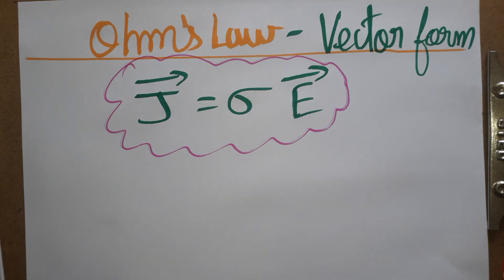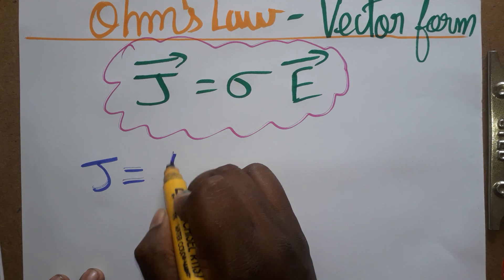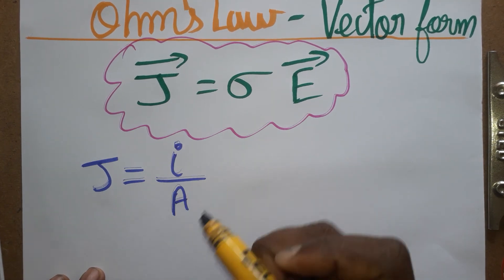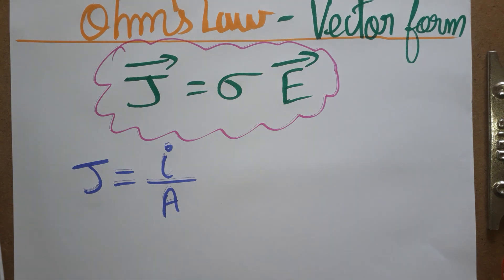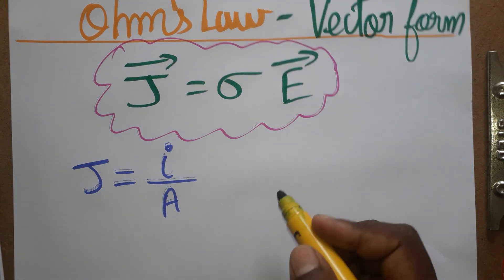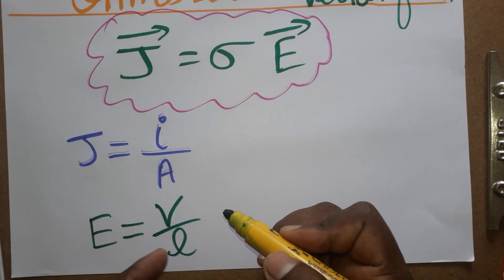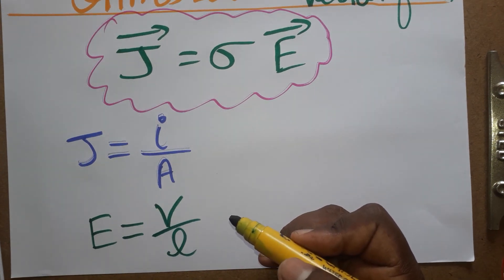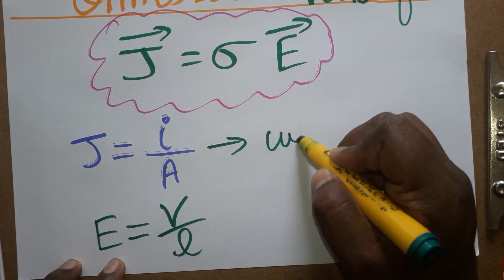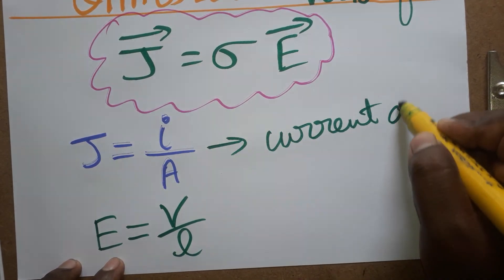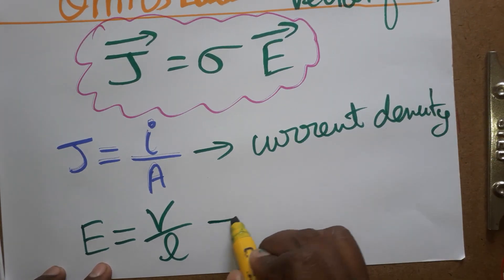J is called current density — current per unit area. E is the electric field, also called potential gradient. Electric field is equal to voltage per unit length, and potential gradient is the changing potential with respect to length. So J is current density and E is potential gradient.